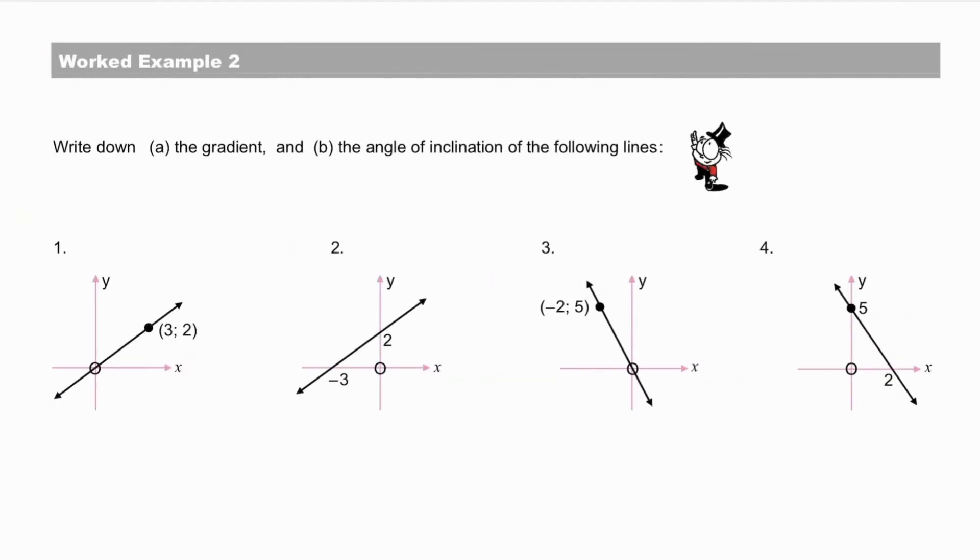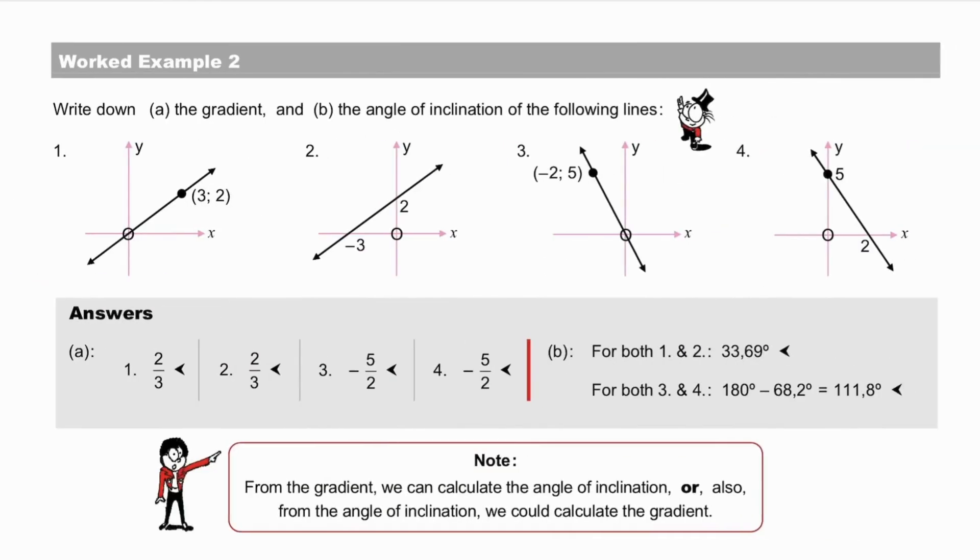Worked example 2: Given the graphs, write down the gradient and the angle of inclination of the following four lines. Pause while you observe these carefully. Pause while checking your answers, and explain any similarities.